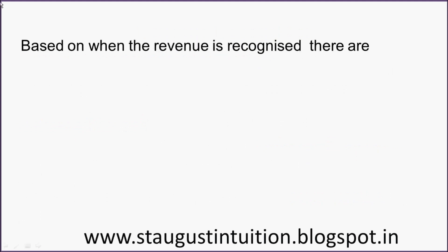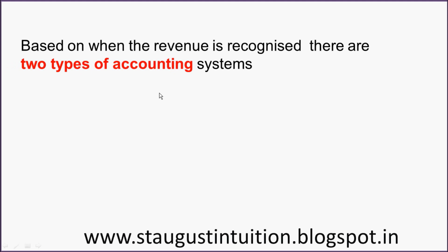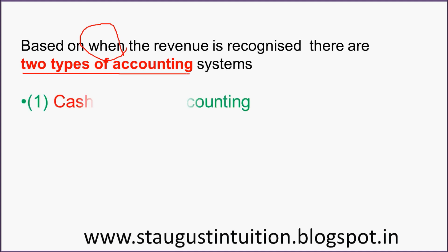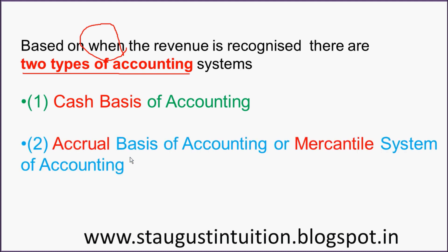Based on when revenues are recognized, there are two types of accounting systems. This is very important. One is cash basis of accounting, and the second one is accrual basis of accounting, also called the mercantile system of accounting.